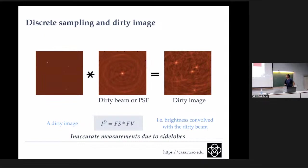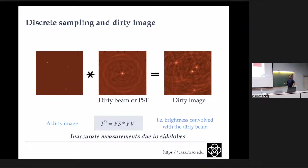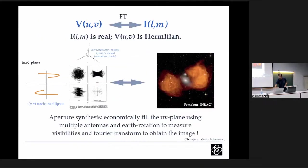Let's say my true image has these four point sources in the sky - you can see them there. That's what I would have gotten if my visibility function was fully sampled. But since it is not, my image is convolved with the Fourier transform of the sampling function - which is nothing but the point spread function. We call it the point spread function because, for example, if the sampling function were a Gaussian, the Fourier transform would also be a Gaussian. If it were a box function, the transform would be a sinc function - exactly the approach we have worked through in optics.